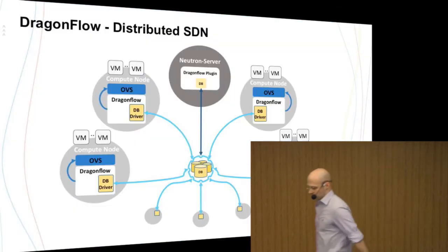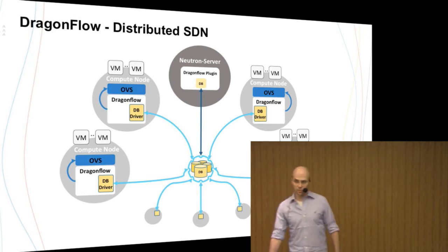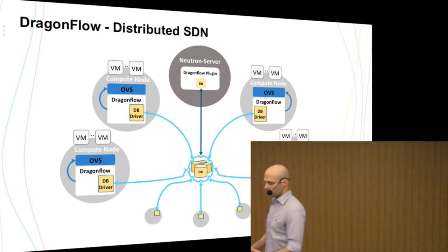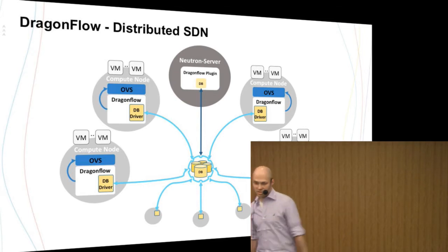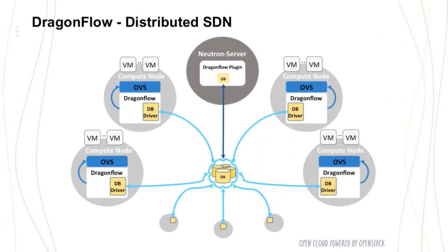This is how a Dragon Flow environment looks like. We have the local Dragon Flow controllers sitting at each of the compute nodes in our setup. They are synchronizing with a distributed database solution that is holding the network topology and the network policy. This is being populated by our Neutron plugin, which translates a Neutron model to Dragon Flow.